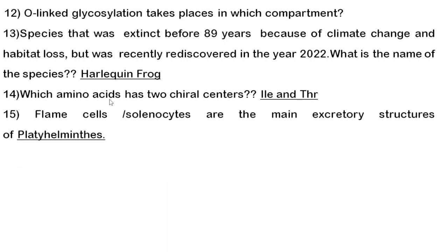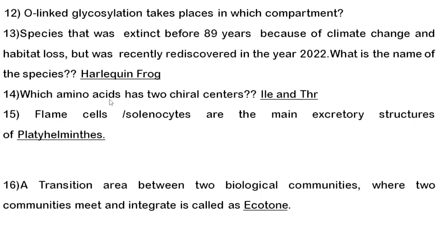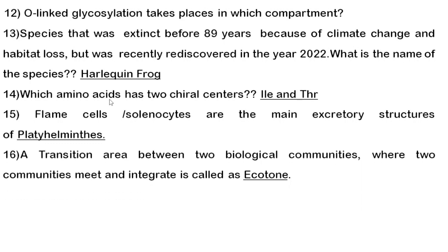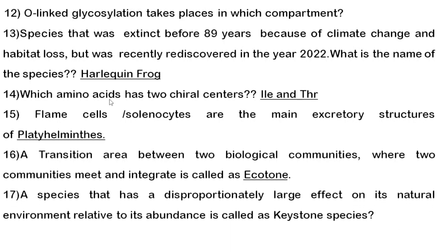Fifteenth question: flame cells, also called solenocytes, are the main excretory structures present in Platyhelminthes. Sixteenth question: the transition area between two biological communities where two communities meet and integrate is called an ecotone. The ecotone experiences maximum biodiversity.